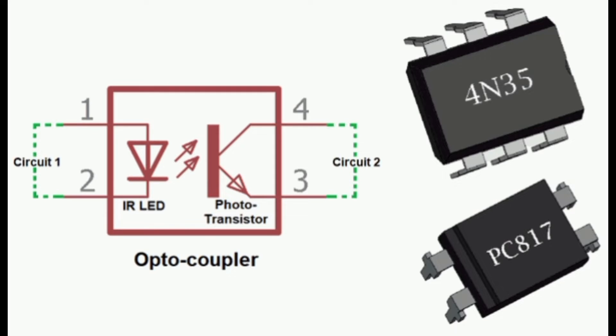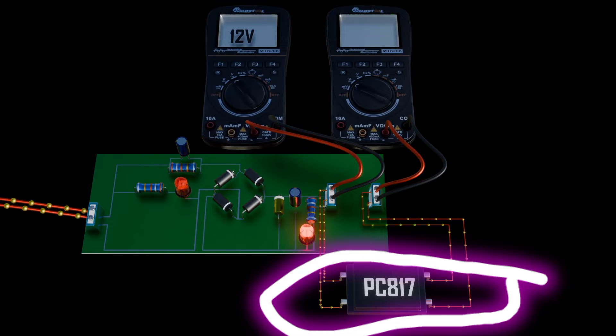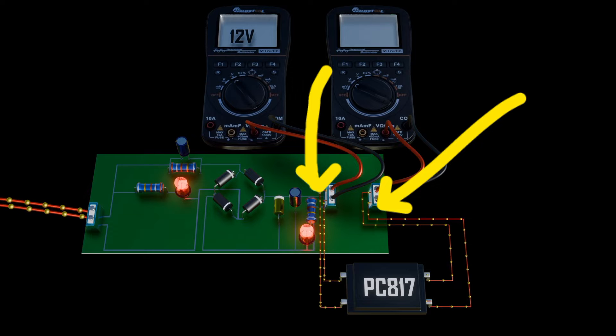An optocoupler, also known as an optoisolator, is an electronic component that transfers electrical signals between two isolated circuits by using light.